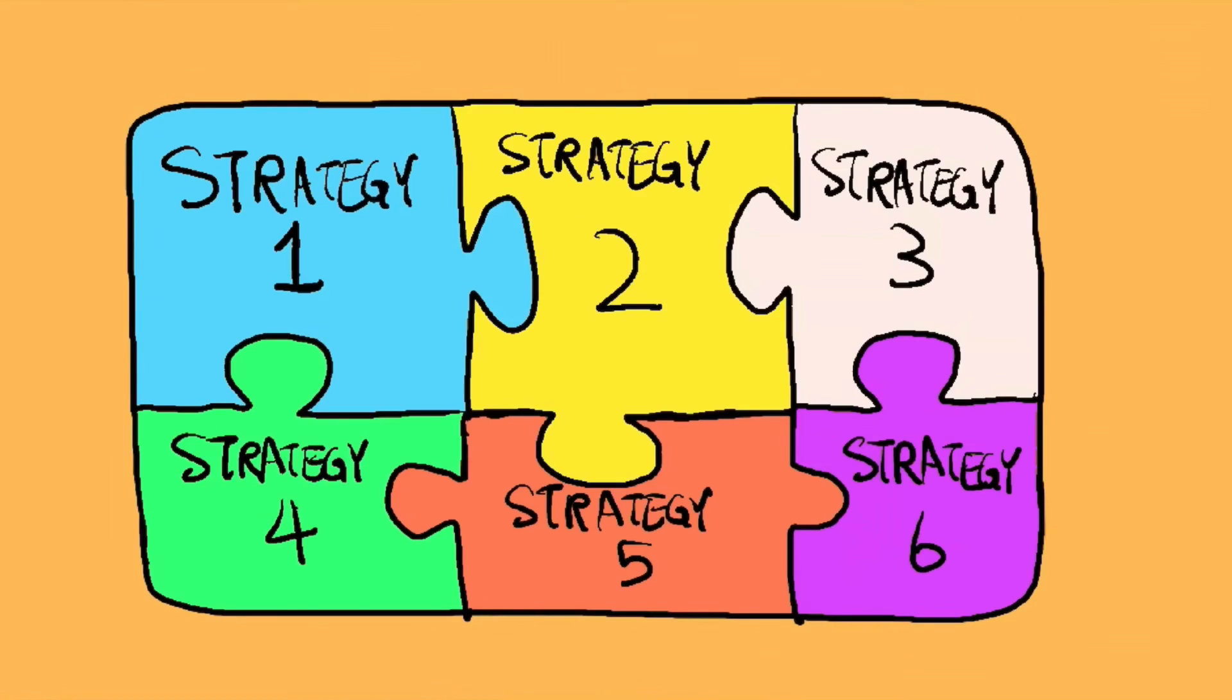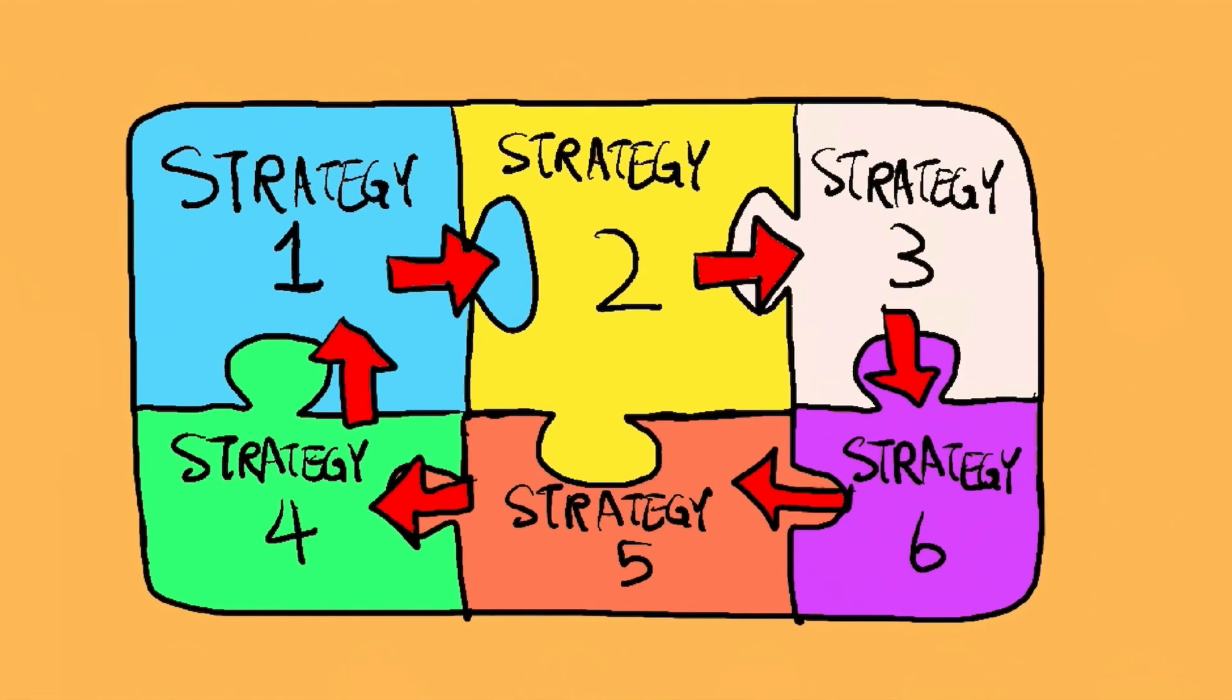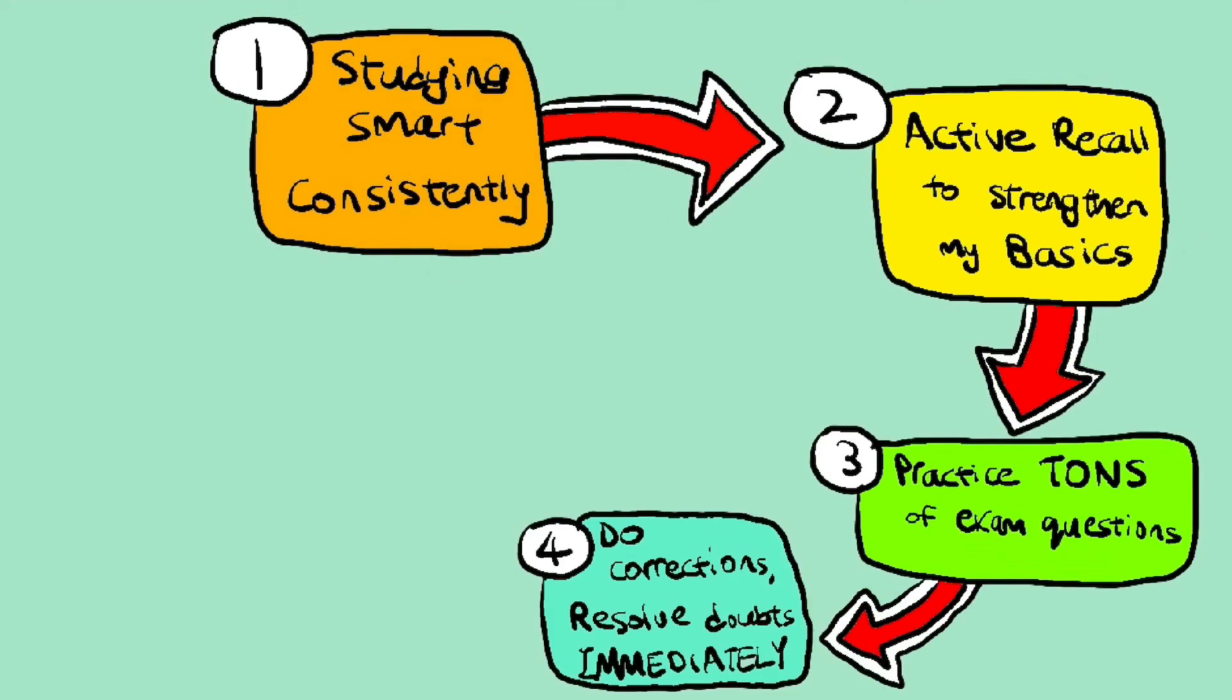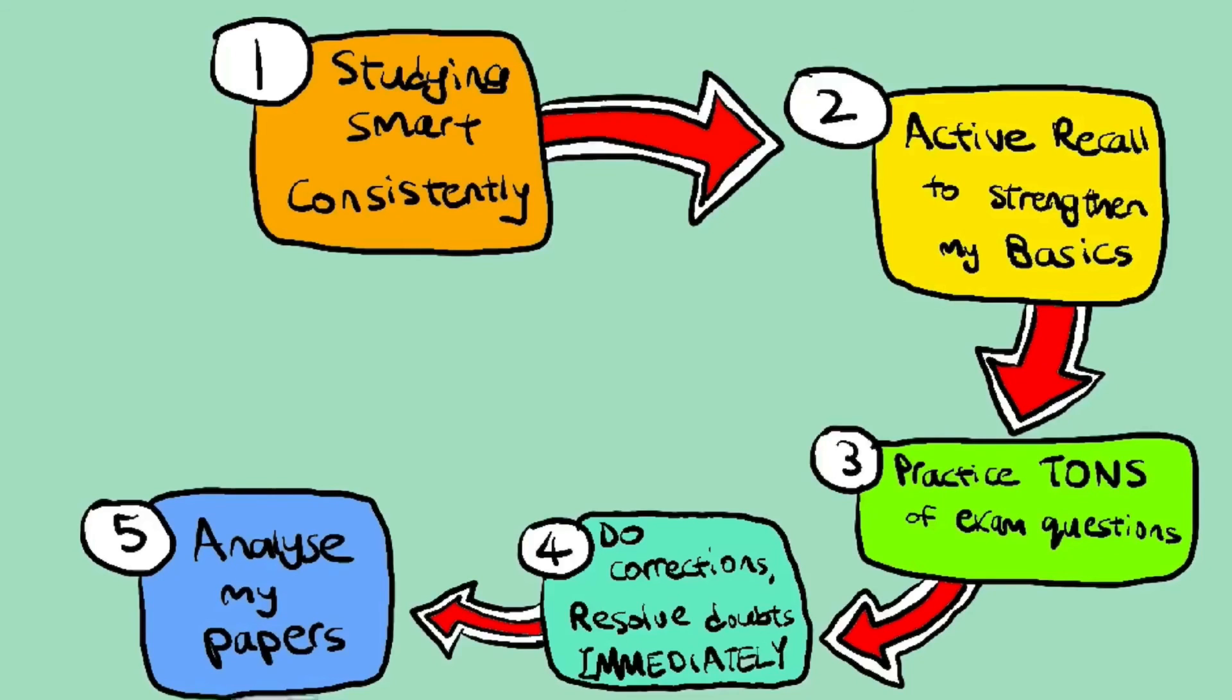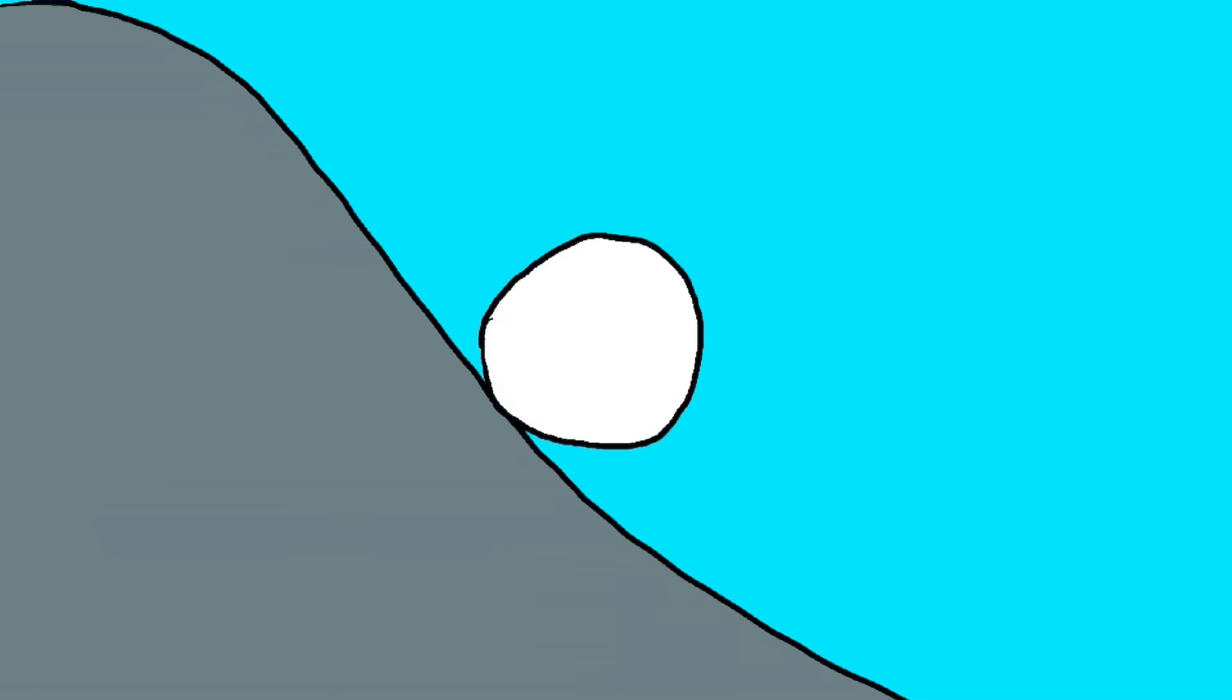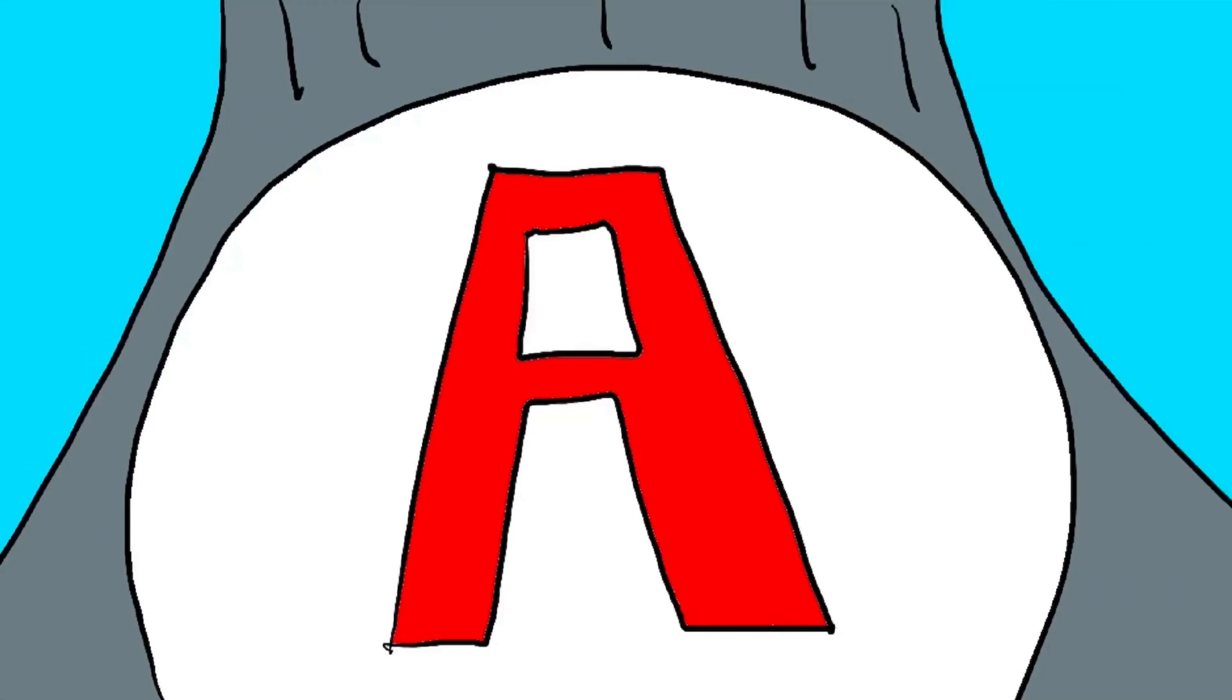Putting together all the strategies that I've mentioned thus far, now that I look back, I actually realized that I created a system or feedback loop of firstly studying smart consistently and ensuring my basics were rock solid with active recall, practicing tons of exam questions and papers, and then doing my corrections and resolving my doubts immediately, analyzing my paper to see which parts I was weaker in, and then tracking my grades to see if whatever I'm doing is helping me improve and whether it's helping me move closer to my goals. And once I've started to finally see results and improvements, meaning that my strategies were working, I tightened the loop even further and built up an unstoppable momentum, which I believe led me to finally achieve an A in H2 Chemistry during my A level exams.